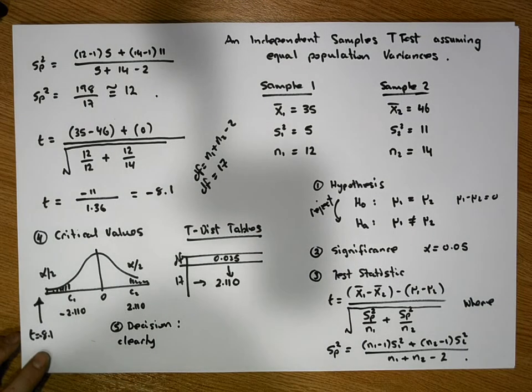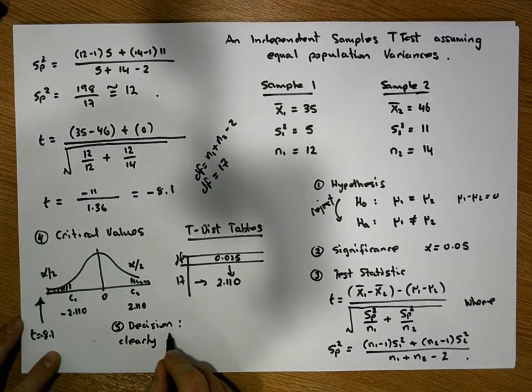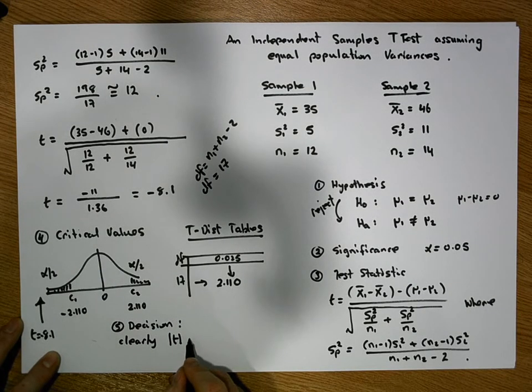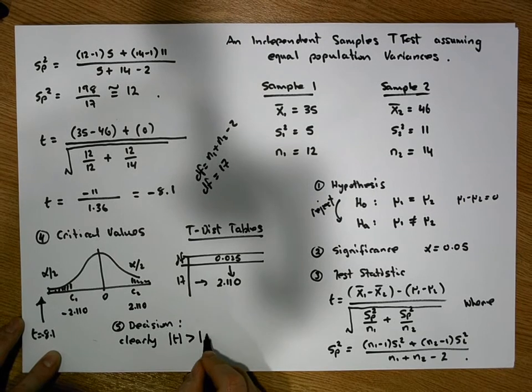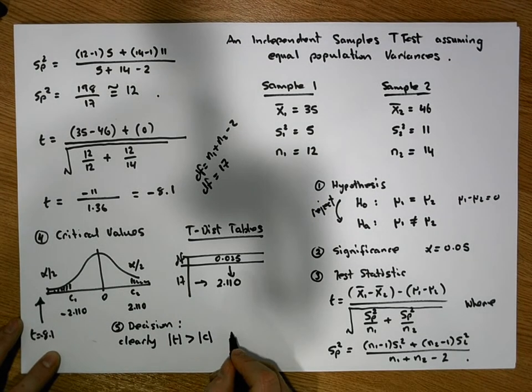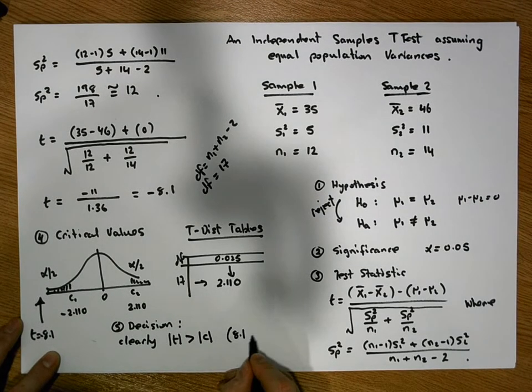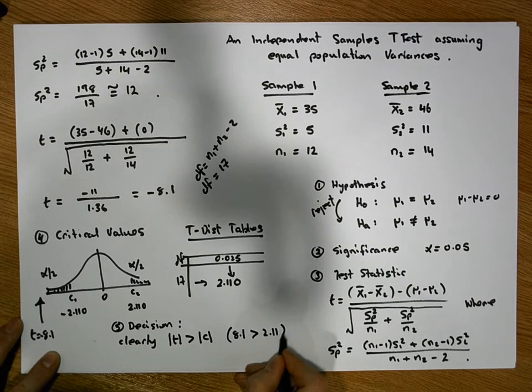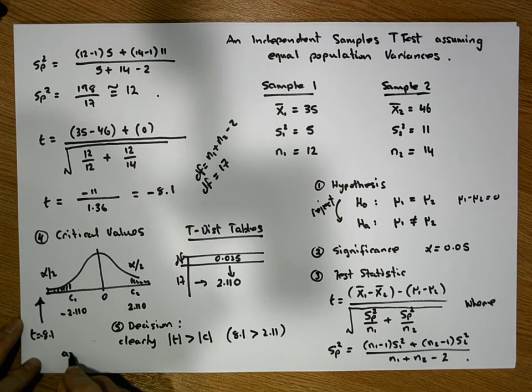So we'll just get the absolute values of them. Throw away our signs. So clearly, the absolute value of our t is bigger than the absolute value of our critical value. What we mean by that is 8.1 is bigger than 2.11. And as such, and as such...